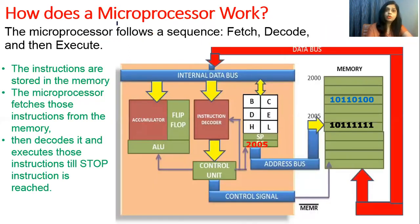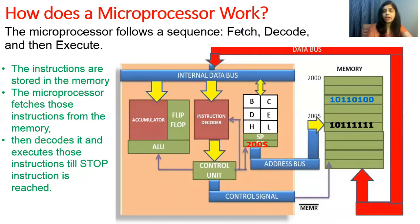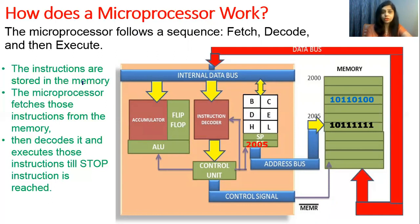Now, how does a microprocessor work? The microprocessor follows the sequence: fetch, decode, and execute. The instructions are stored in memory. When we write coding or programming for a processor — whether in C++, assembly language, or anything else — the program is never stored inside the processor itself; it is always stored in memory.